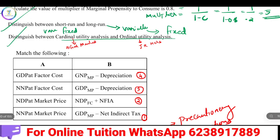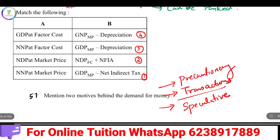Distinguish between cardinal utility analysis and ordinal utility analysis. Cardinal utility analysis, associated with Alfred Marshall, says utility can be measured in numbers. Ordinal utility analysis, associated with J.R. Hicks, says utility cannot be measured numerically but can be ranked.